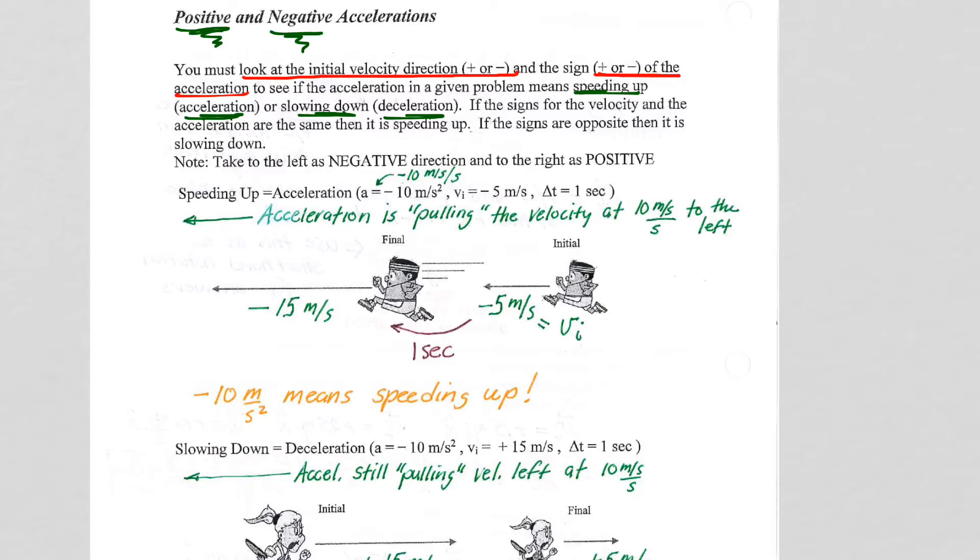So, if we start with an initial velocity backwards of 5 meters per second - so, that's the negative 5 meters per second that we have here, our initial velocity. If our acceleration itself is negative - notice negative and negative. Negative acceleration, negative initial velocity, that means speeding up.